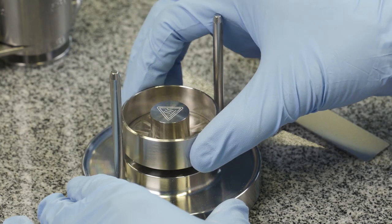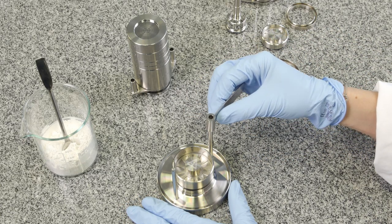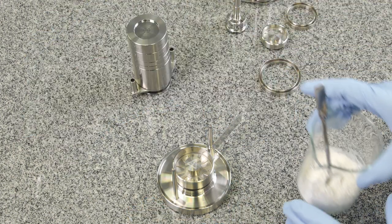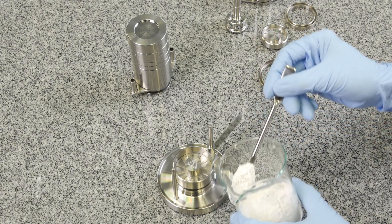Start by putting the cup into the sample preparation bench and add the scraper bar. Then fill the shear cell with your sample.